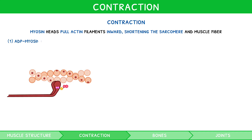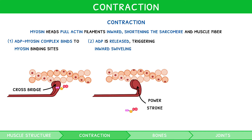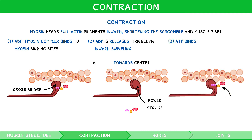ADP myosin head complexes bind to myosin binding sites to form crossbridges. ADP is released from the myosin heads, triggering inward swivelling of the heads known as the power stroke. This brings actin filaments inwards towards the centre of the sarcomere. Then new ATP molecules bind to myosin heads, which breaks the crossbridges, detaching myosin from the myosin binding sites.